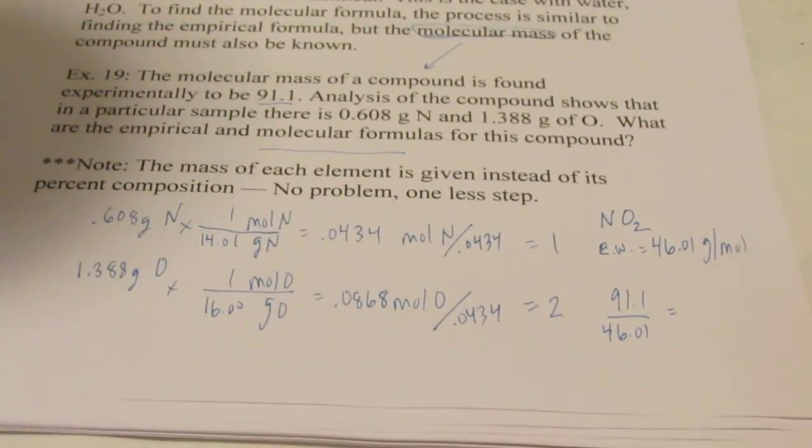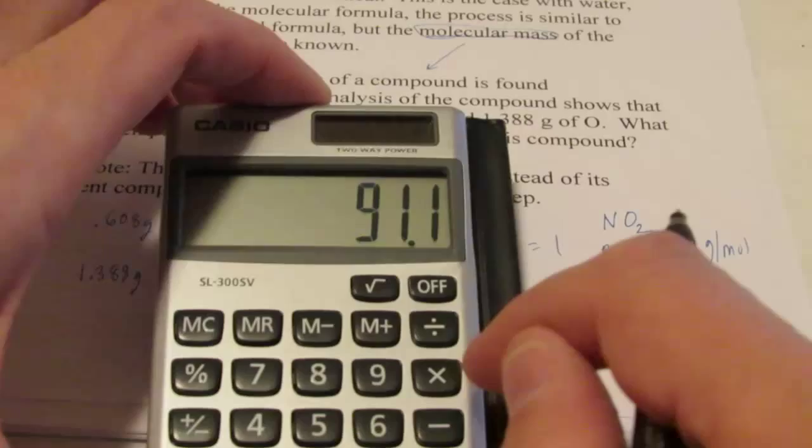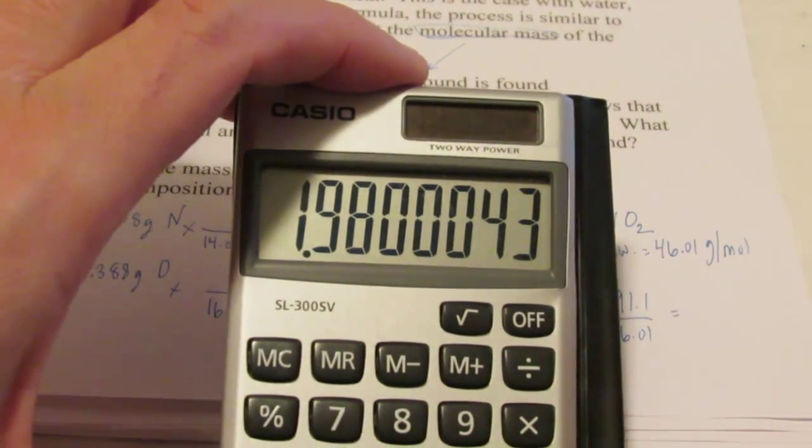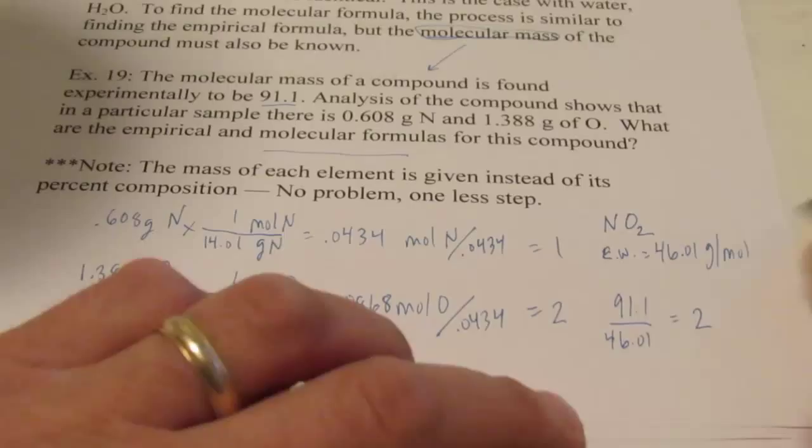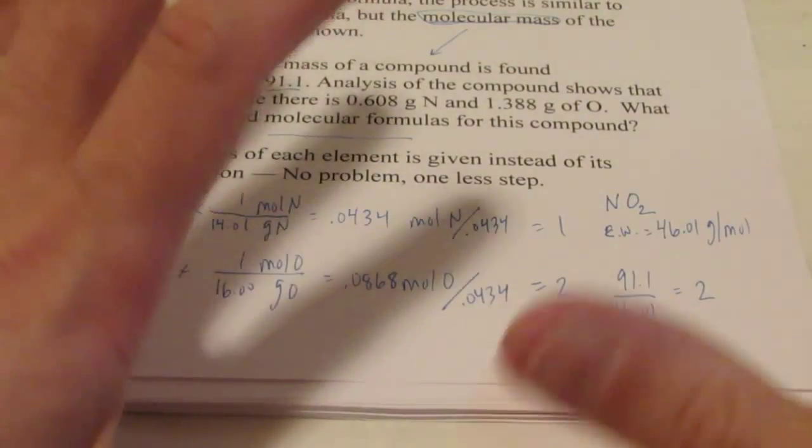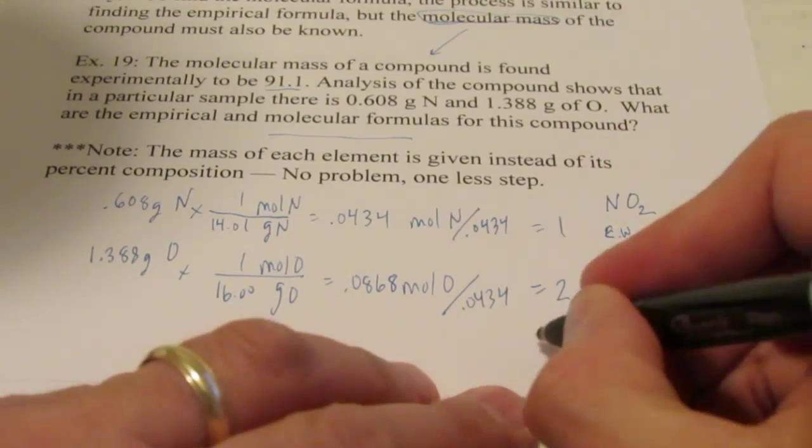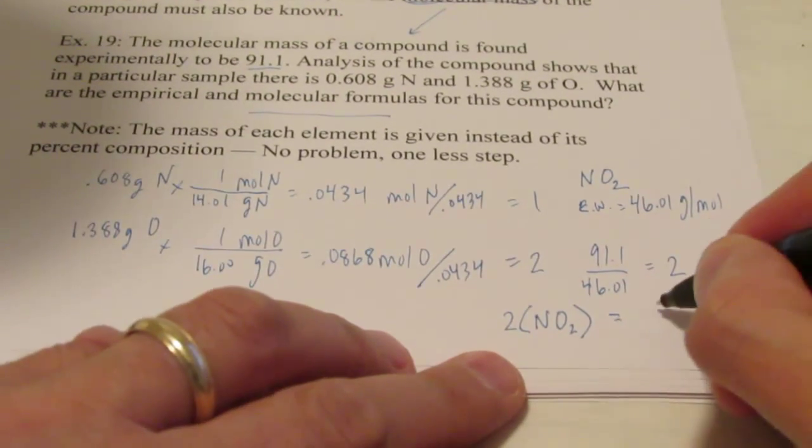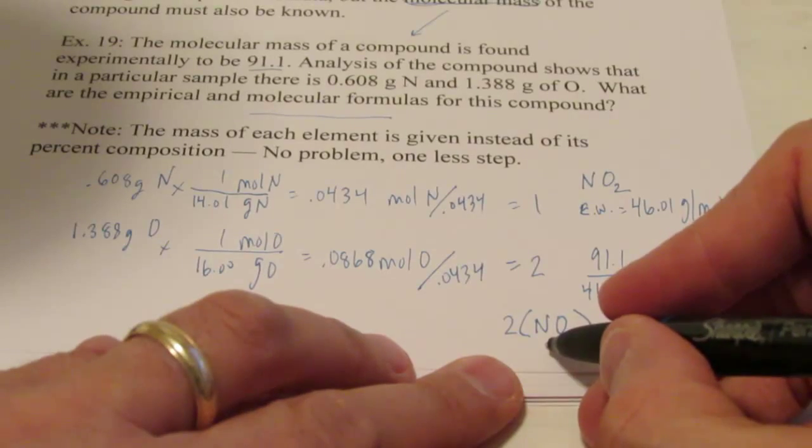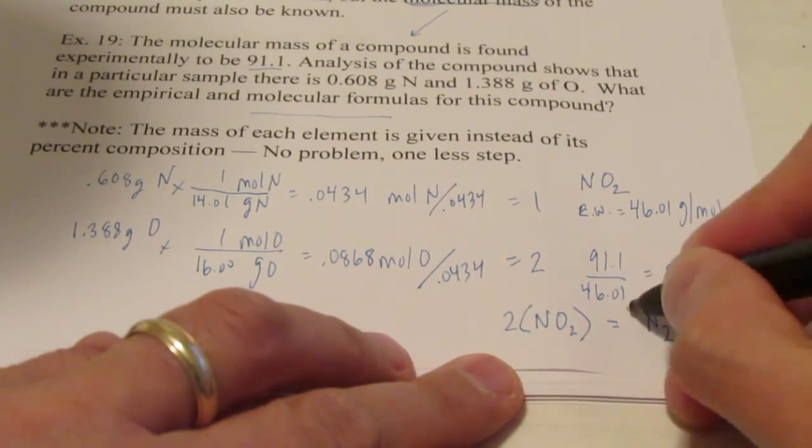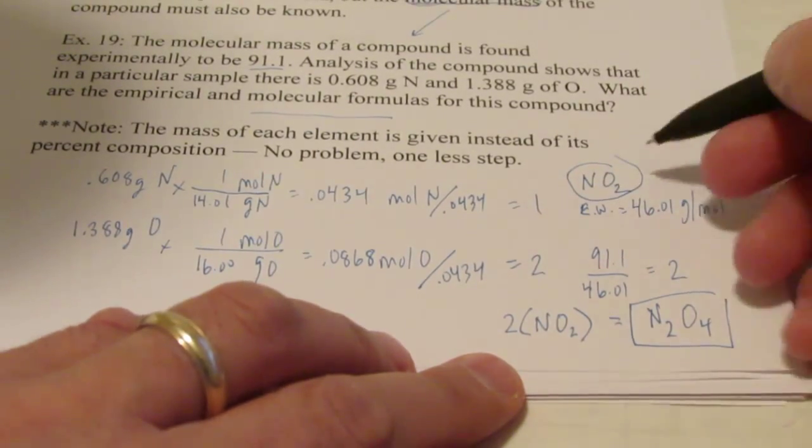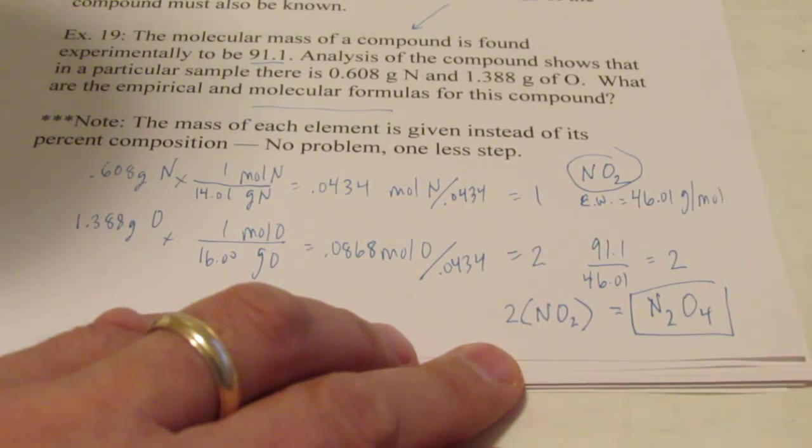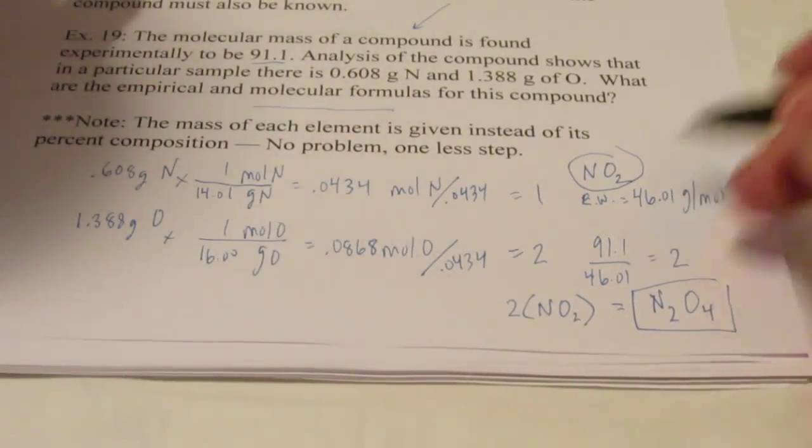How much bigger is the molecular weight than my empirical weight? Well, let's find out. 91.1 divided by 46.01 is, boy, that's pretty close to two, isn't it? It's two times bigger. So my real compound is twice as big. Doesn't that mean that I'll have twice as many N's and twice as many O's? So the molecular formula would be N2, that's twice as many N's, O4. So here's my empirical, lowest whole number ratio, and here's my molecular, the actual ratio. So once again I had to know the molecular weight to do that.